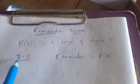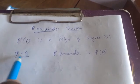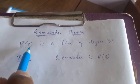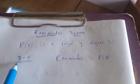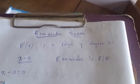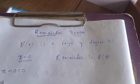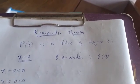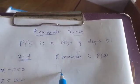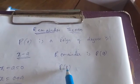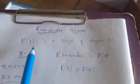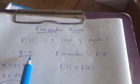Simply remember: P of X is divided by X minus A. Now let us find the zero of X minus A. Take X minus A equals 0, take minus A to the right side, so X equals A. Substitute X equals A in the polynomial P of X — that is P of A. So P of A is the remainder when P of X is divided by X minus A.